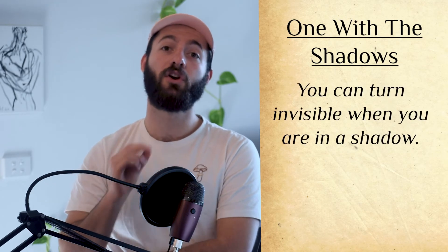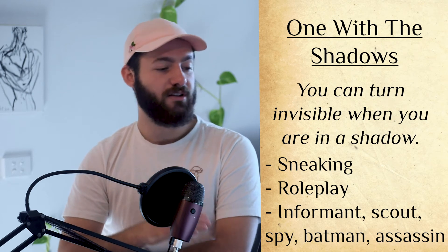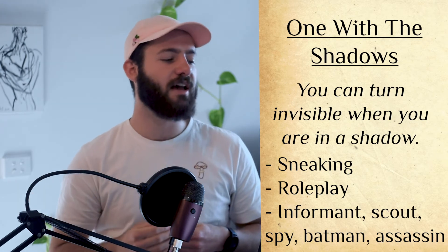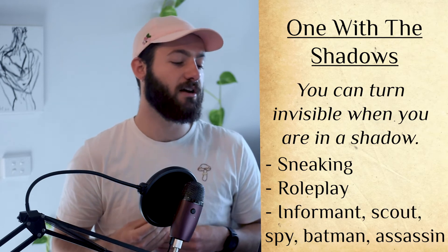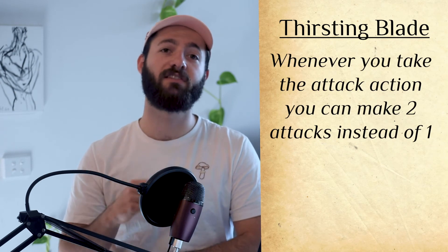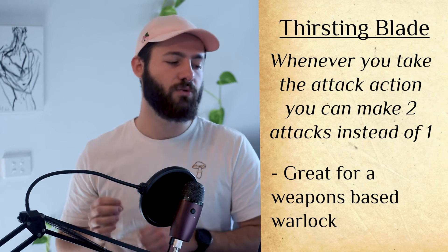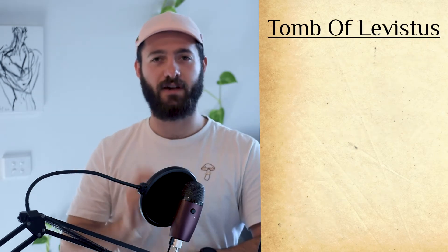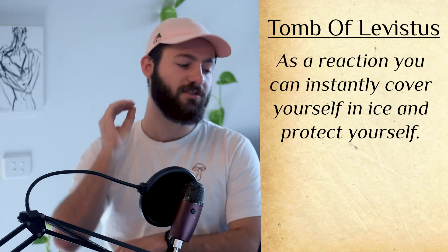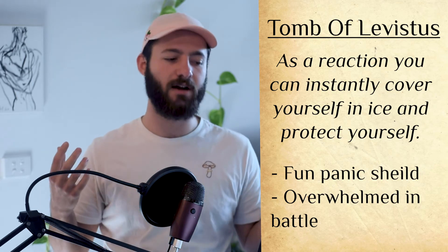One with the Shadows — you can turn invisible when you're in a shadow. This is really fun for sneaking and roleplay; you can just take a step back mid-conversation and dramatically disappear Batman-style. This obviously lends itself to sneaky characters such as an informant, scout, spy, or assassin. Thirsting Blade — whenever you take the Attack action on your turn, you can make two attacks instead of one. This is awesome if you are creating a weapon-based Warlock and I highly recommend it to keep up with other melee combat classes. Tomb of Levistus — as a reaction, you can instantly cover yourself in ice and protect yourself, acting as a little panic shield when you're overwhelmed in battle and need a bit of health quickly.